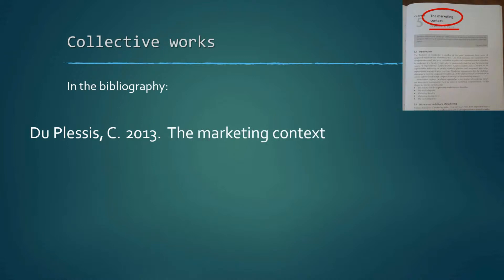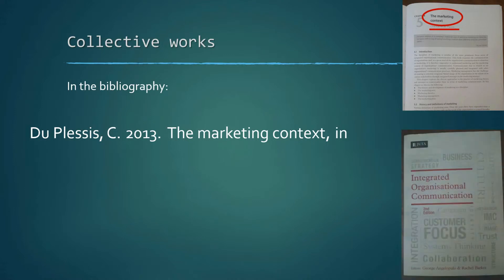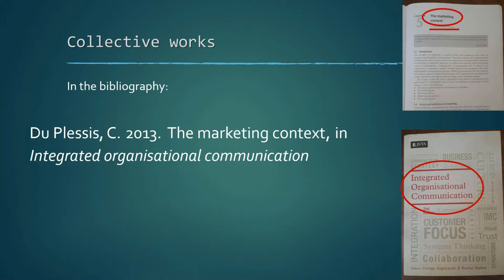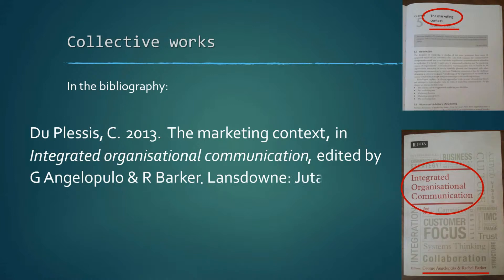We then follow with the year of publication as per usual and then the title of the chapter. Now, this is where collective work starts to get interesting. The title of the chapter is followed by a comma, the word in, and then the title of the book in italics and in sentence case, followed by another comma, and then the words edited by, and then the editor's names.